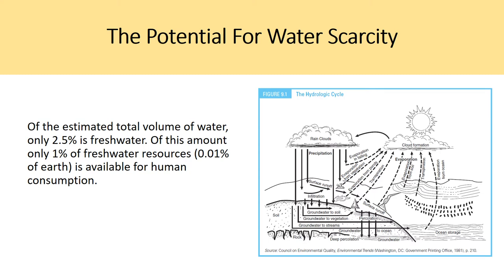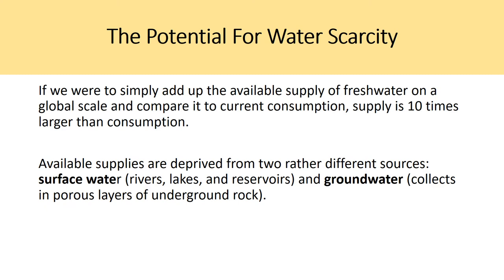Of the estimated total volume of water, only 2.5% is freshwater. Of this amount, only 1% of freshwater resources — or 0.01% of the Earth's total water supply — is available for human consumption. If we were to simply add up the available supply of freshwater on a global scale and compare it to current consumption, supply is 10 times larger than consumption. But don't let that fool you — we have to think about the hydrologic cycle and the time it takes for water to be recycled and come back to us.